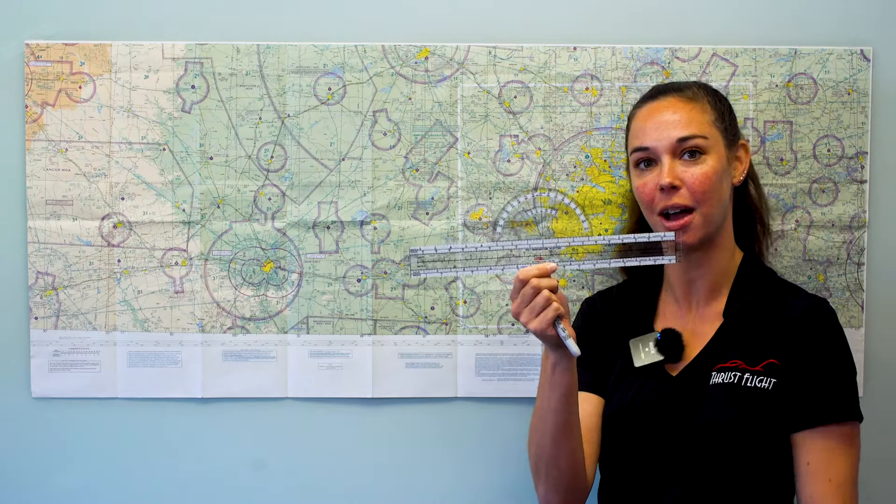So I need two tools to accomplish this. I need my plotter, which you can see has the straight edge as well as the protractor here on top. I also need a sectional chart.